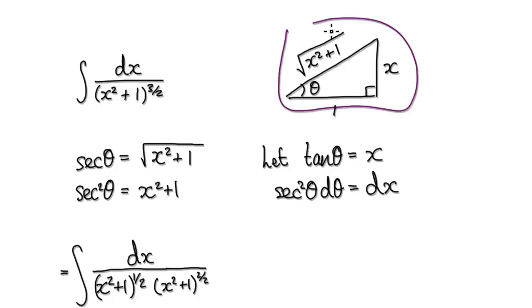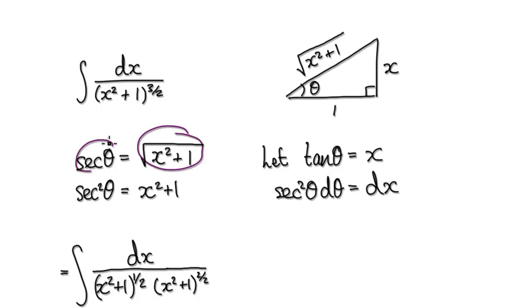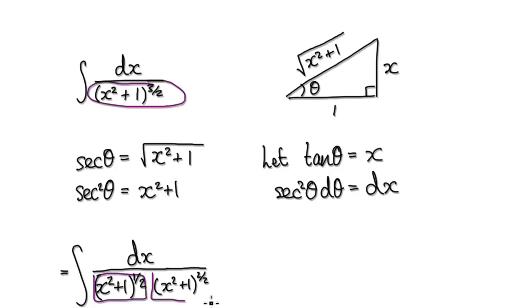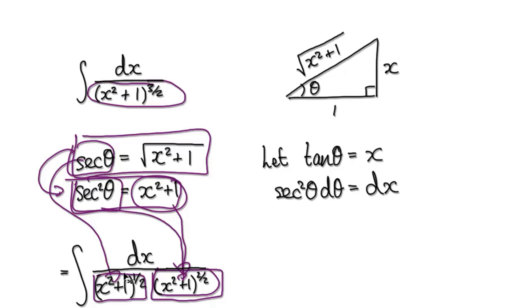From the diagram, secant would be hypotenuse over adjacent, which would be 1. So this thing here equals this thing here. So looking at this, you can break it up as one block multiplying this block. So now, currently we're here. If you square both sides, that would then give you this. So don't forget, this thing here is this thing here. So we can put this block into here, and then we can put this block into here.